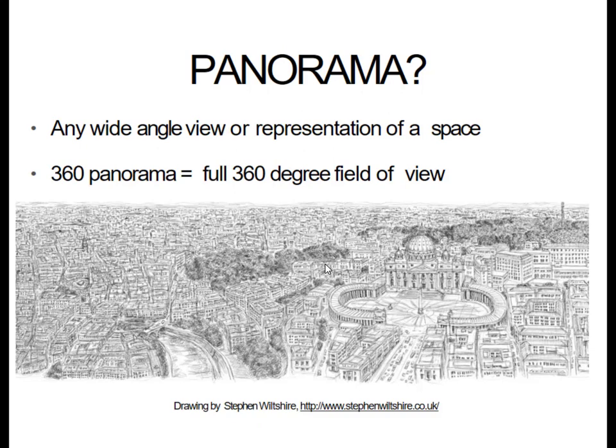So what is a panorama? A panorama is any wide angle view or representation of space. A 360-degree panorama is equivalent to a full 360-degree field of view. A 180-degree panorama would be from here to here and everything in between, whereas 360 would be taking an image all the way around.